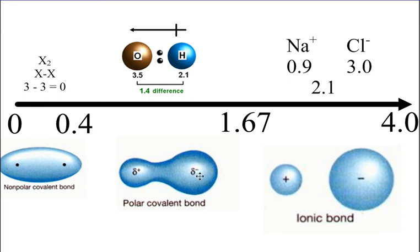We symbolize partial charges with the lowercase delta. There is greater electron density around the partial negative compared to the partial positive. With two poles, we call this a polar compound, as seen in the bond between hydrogen and oxygen.